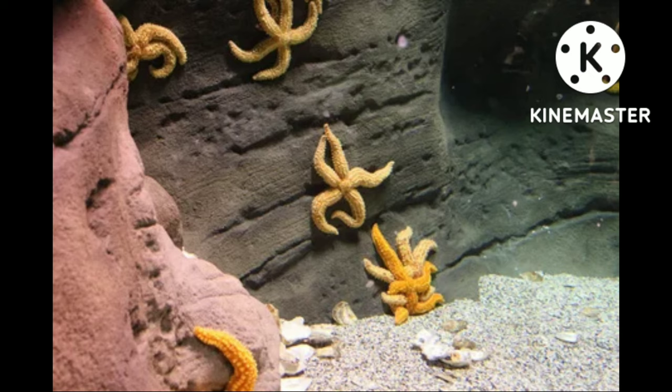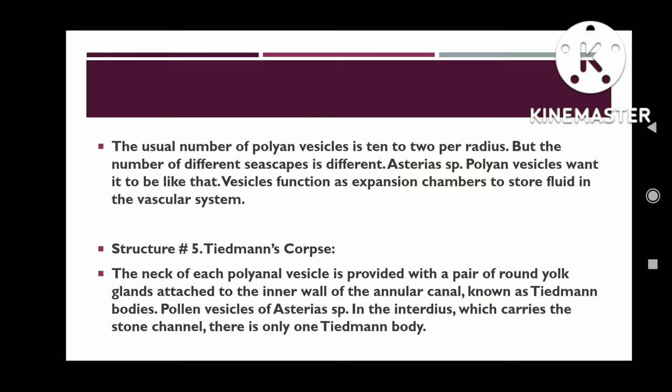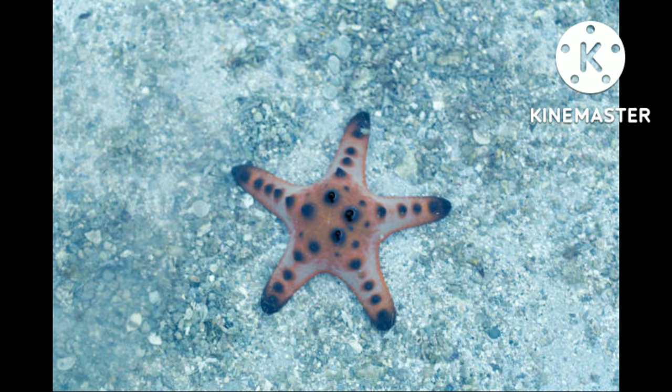Polian vesicles are suspended in the perivisceral coelom. The usual number of Polian vesicles is 10 to 2 per radius, but the number differs across different species.